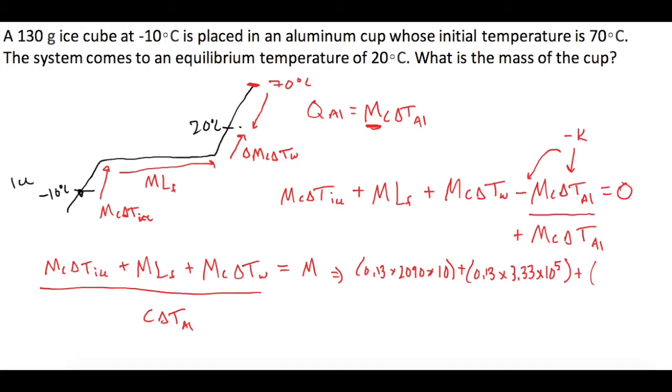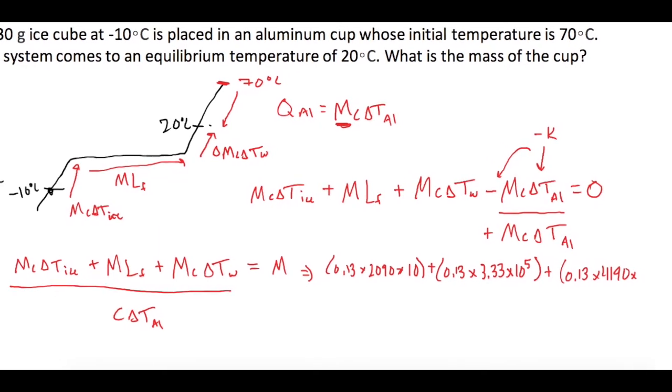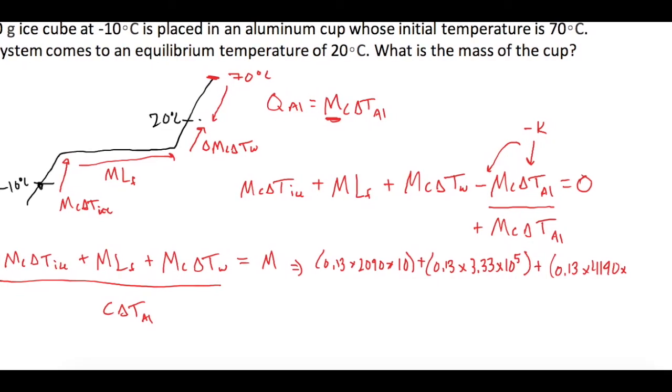Now we're going to add, finally, the mc∆T of water, which is 0.13 kilograms, times 4190, times the change of temperature from zero to 20°C, which is 20 kelvin.